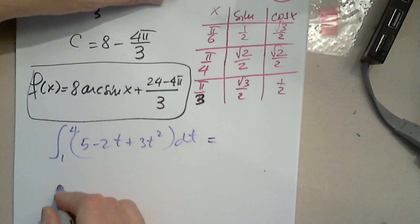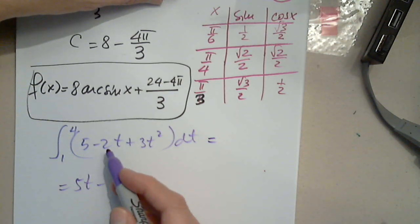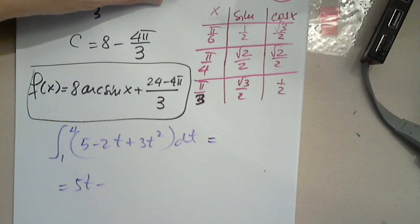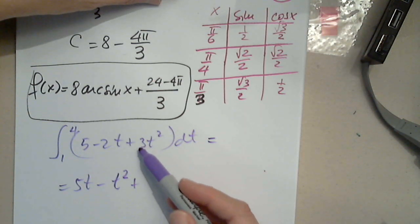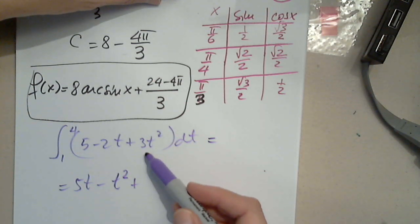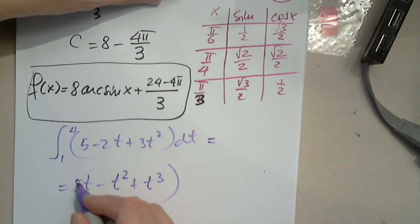So I have 5t minus 2t squared over 2, which simplifies to t squared, plus 3t cubed over 3, which simplifies to t cubed.